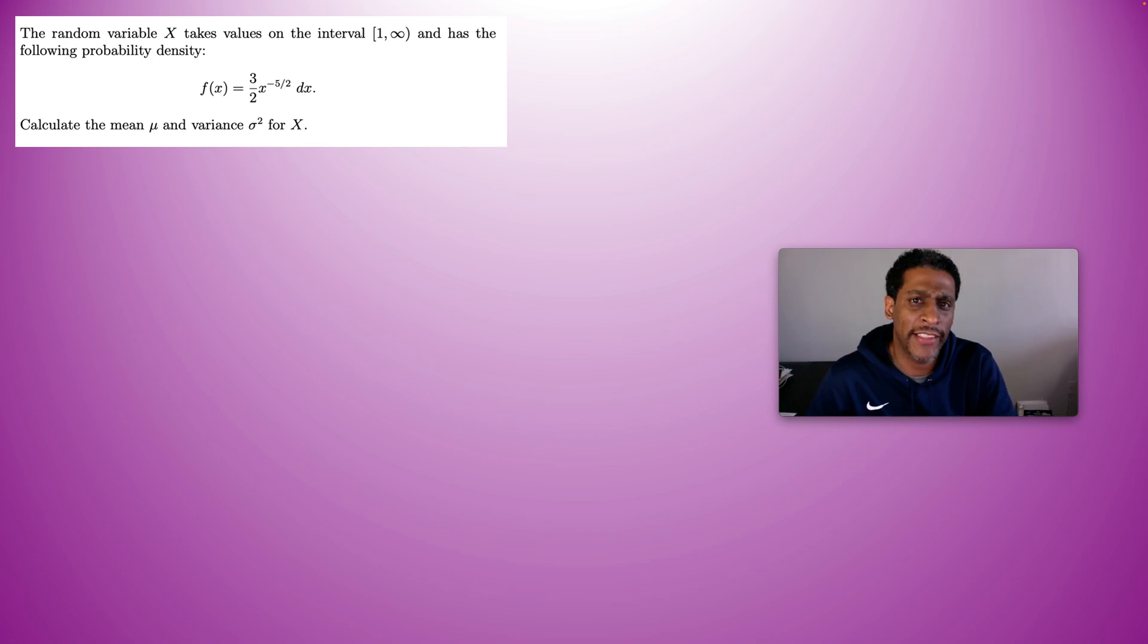Hello, this video looks at finding the mean and variance of a random variable with a given probability density function. Another way to say mean is the expected value of the random variable. You don't have to check whether it is a probability density function, you're told that it is. But it's only on the interval from 1 to infinity that the function is that particular function, otherwise the function is 0. That's how it's understood. You don't have to worry about x's from 1 to infinity.